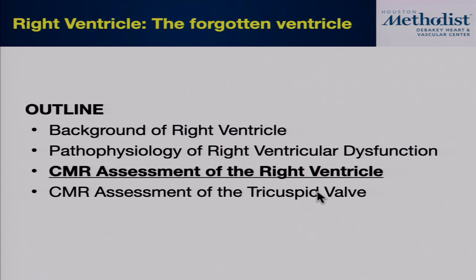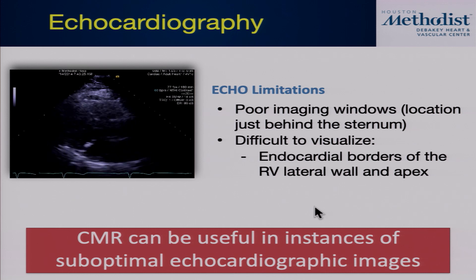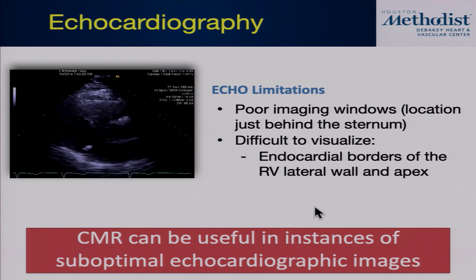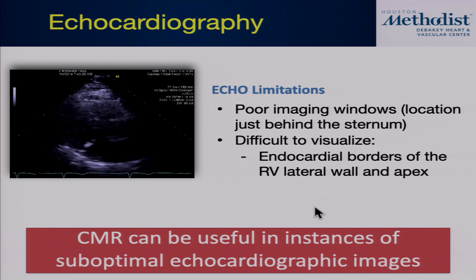Now let's get to how MRI is used to assess the right ventricle. When would you think about doing an MRI? The ACC/AHA guidelines indicate that if you have suboptimal echo windows or difficulty visualizing endocardial borders, that's an indication to proceed from echocardiography to cardiac MRI. The right ventricle is often more challenging to image by echocardiography, and the shape of the RV is not a nice circle like the LV but rather triangular or pancake-shaped. The RV is one area where MRI really shines.